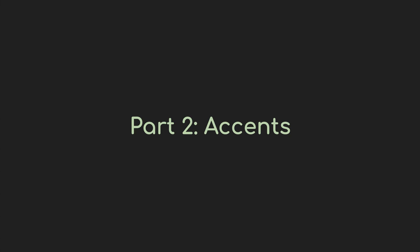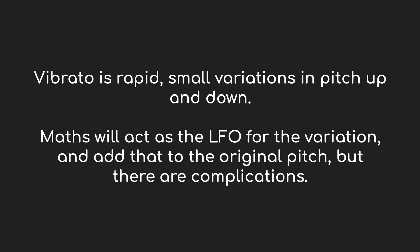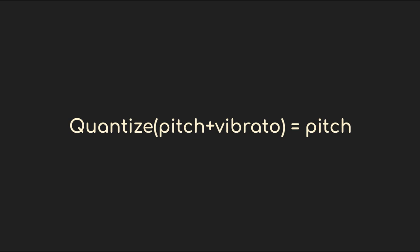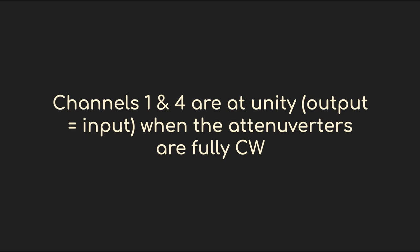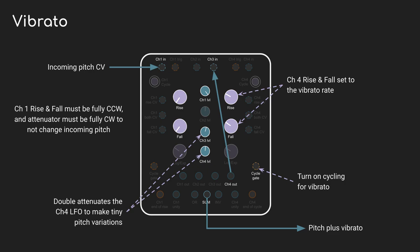One challenge with a sequencer is there's often no variation to the notes aside from the pitch. Maths can help us out here by adding accents to individual notes. We'll start with vibrato. Vibrato is the rapid warbling of pitch around a note, and in the context of pitch CV that just means adding a little bit of LFO to it. So instead of putting the quantizer on the output from Maths, we have to take the output of the quantizer and run it into Maths and add the variation without messing up the original pitch. Luckily the inputs on channels 1 and 4 are effectively unity inputs when you crank the attenuverter all the way up. The variation we're talking about is tiny — you can dial it down on the attenuverter, but it usually isn't small enough, so we pass it from one attenuator into the other. This double attenuation gets us down to where we need to be.